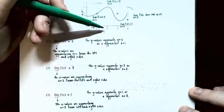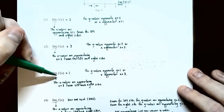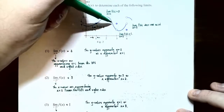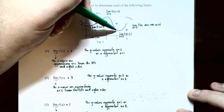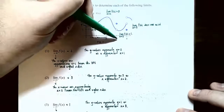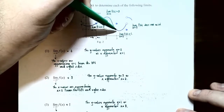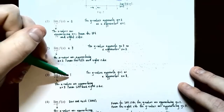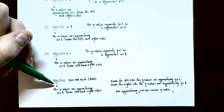Number three: find the limit as x approaches three. From the left side, the graph falls to a hole in the graph at y equals one. From the right side, approaching x equals three, the graph goes down then up to the same hole at y equals one. So the limit as x approaches three from either direction is one.